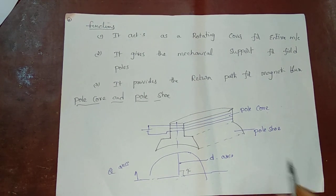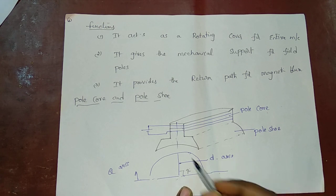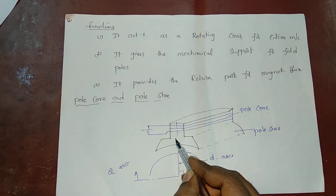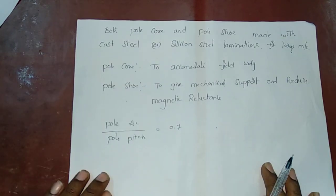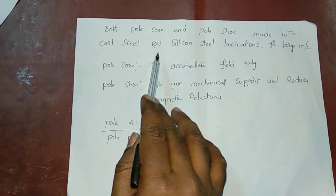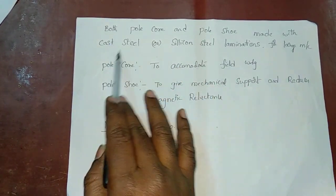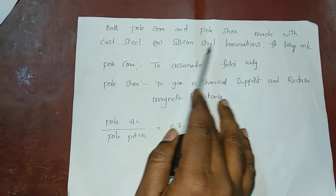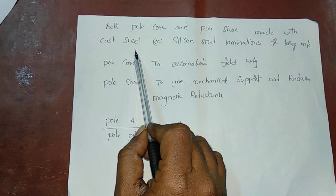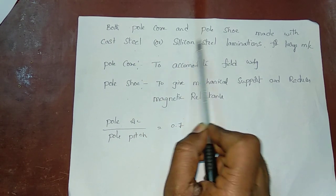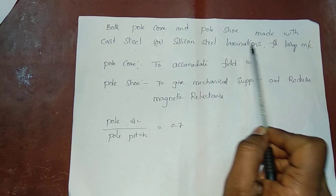There is a pole pitch. Both the pole core and pole shoe are made with cast steel or silicon steel. If you use a small machine, you can use cast steel. If you use a large machine, you can use silicon steel with lamination, similar to transformers, to reduce eddy current losses.